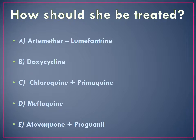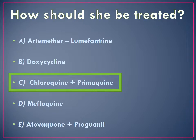So how should she be treated? Should this patient receive A, Artemether-Lumefantrine; B, Doxycycline; C, Chloroquine plus Primaquine; D, Mefloquine; or E, Atovaquone plus Primaquine? She received C — Chloroquine and Primaquine for 14 days. Since Colombia is not an area of chloroquine resistance, this patient can receive chloroquine, and Primaquine is added to this regimen because it is an excellent gametocide.